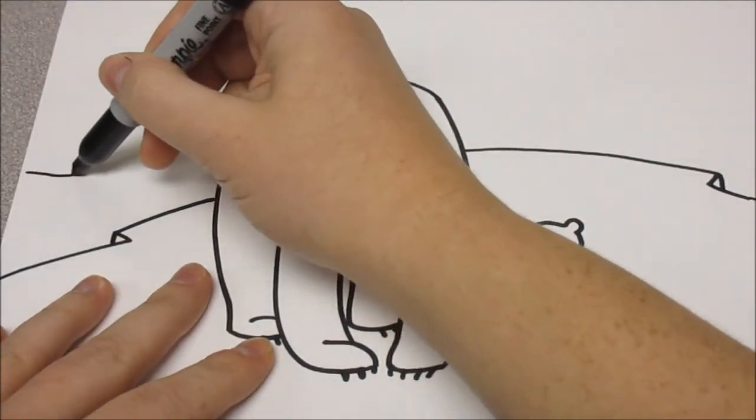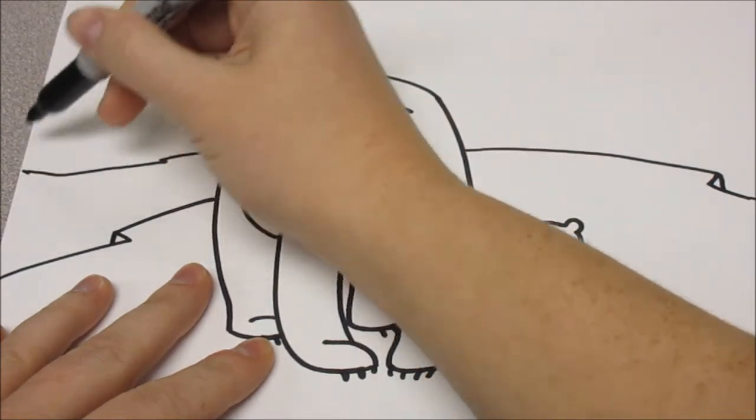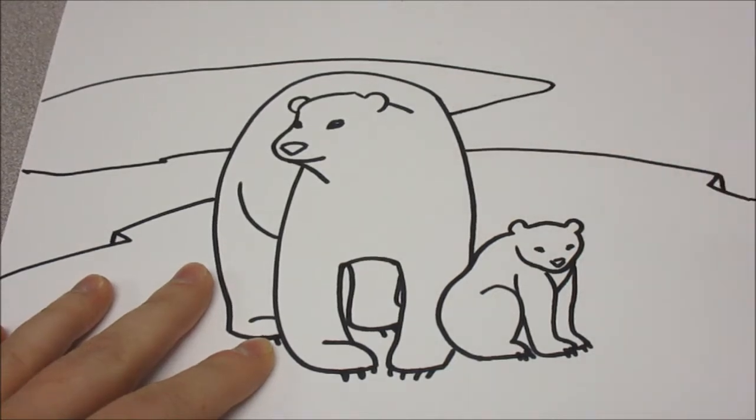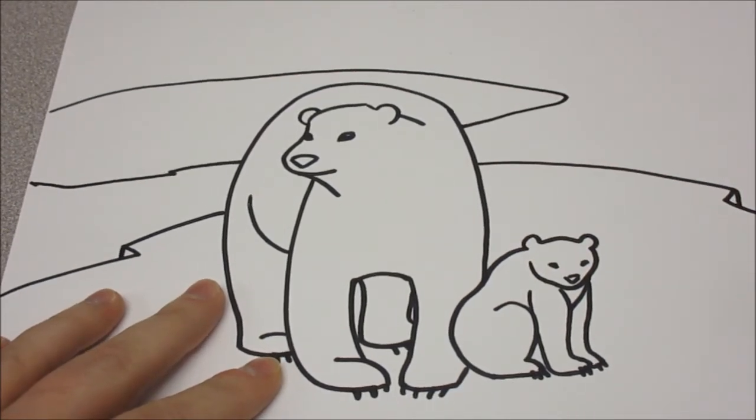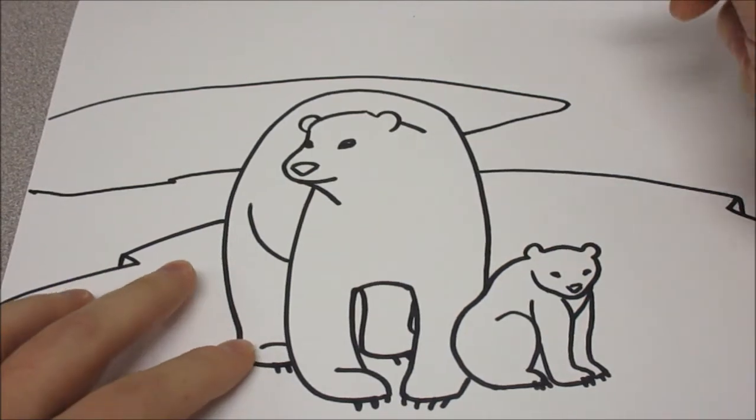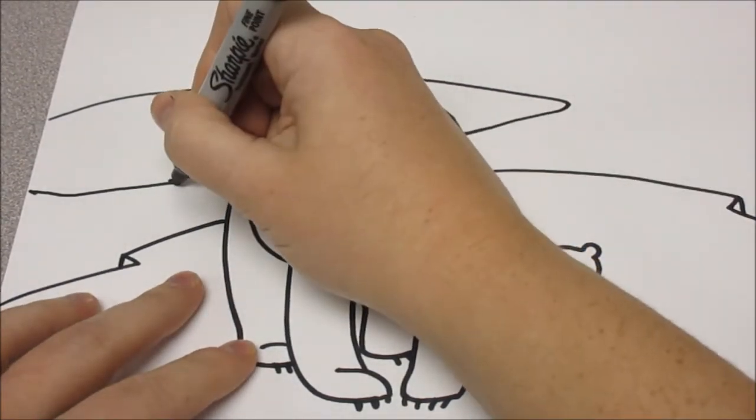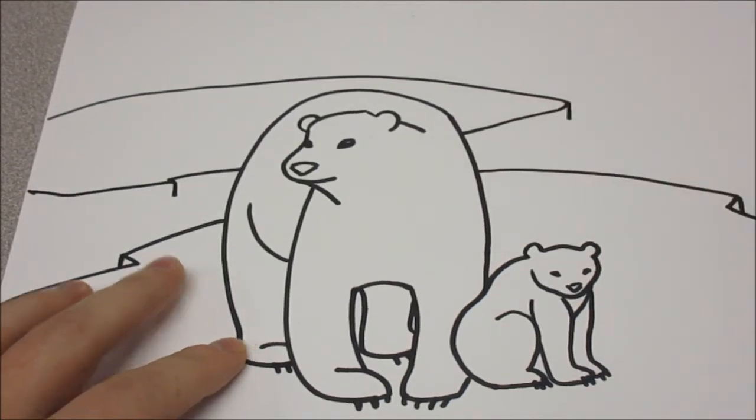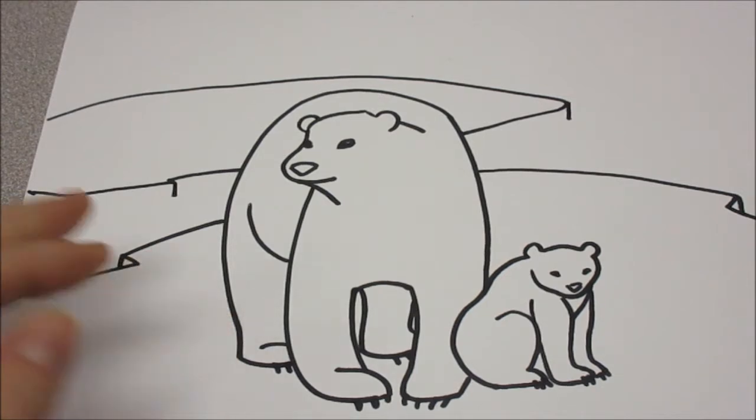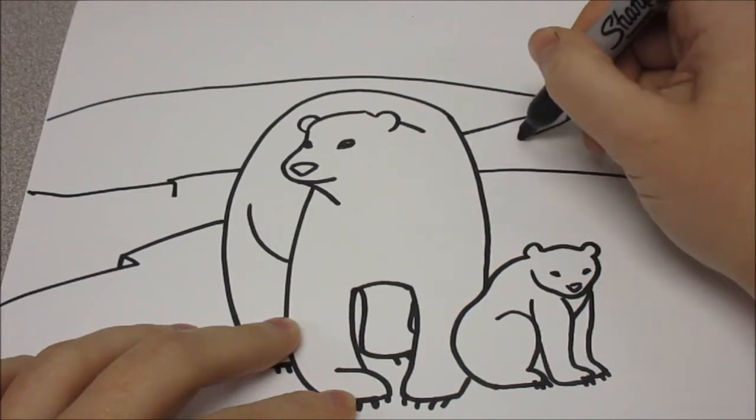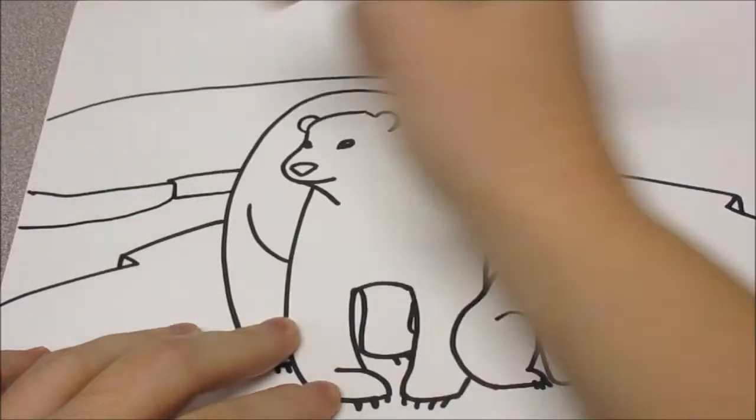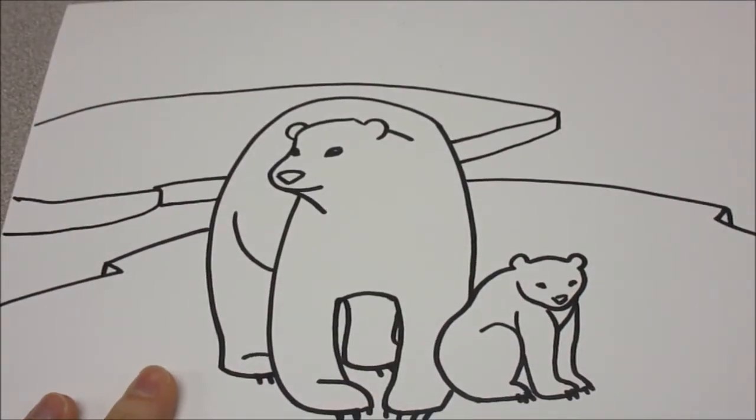I'm going to make another zig shape back here. And then anywhere I have a little zig, I'm going to make a little straight line. And on the end of my little straight line, I'm going to trace the edge. That looks like a piece of ice floating in the water.